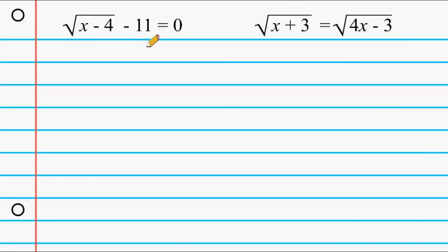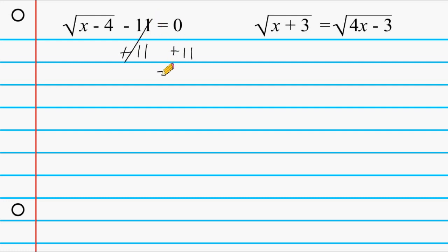The first thing we have to do with this example is take this minus 11, which is not underneath the radical symbol, and move it over to the right hand side of our equation. So we add 11 to the left and to the right. These two terms cancel out leaving us with 11 on the right, and on the left we still have the square root of x minus 4.